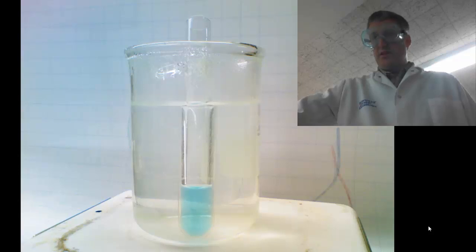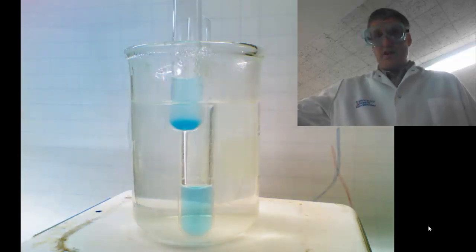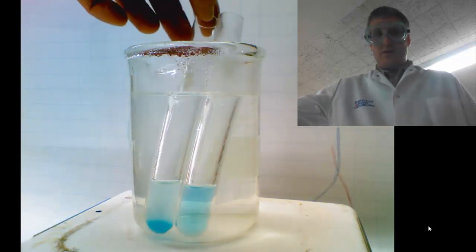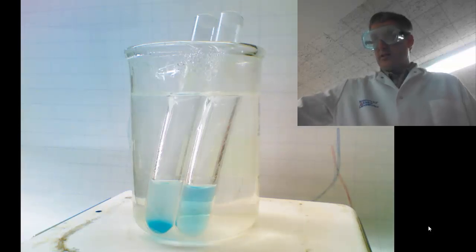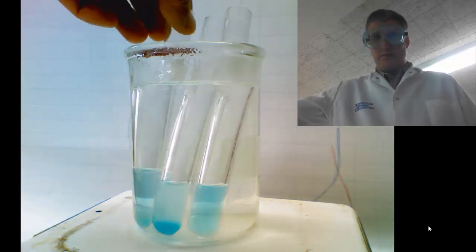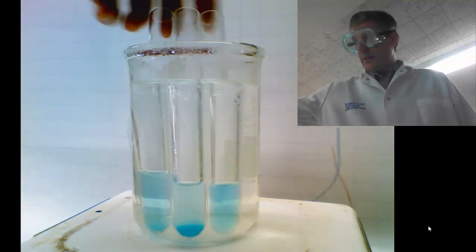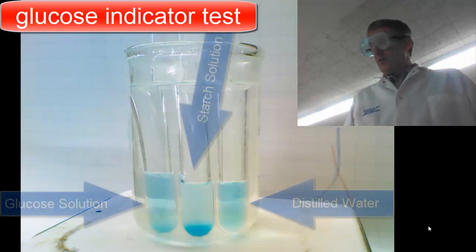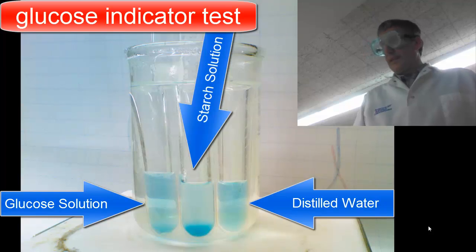We're going to put the glucose indicator into the hot water bath, the glucose indicator in starch into the hot water bath, and the glucose indicator in the glucose solution into the hot water bath. You need to heat it up for at least 2 minutes.